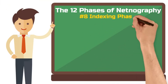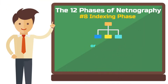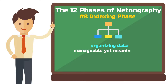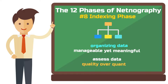Phase 8: The indexing phase. This phase is about organizing your data. Often, you will have more data at your disposal than you can analyze, so the task is to compile a manageable yet meaningful amount of data to proceed with your analysis. You will need to assess your data — what are particularly important data sources and what can be neglected? It is advisable to select fewer but high-quality data sources rather than many of low quality.